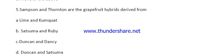Question number five: Sampson and Thornton are grapefruit hybrids derived from which cross? The options are: lime and kumquat, Satsuma and Rupee, Duncan with Daki, or Duncan with Satsuma. The right answer is option C — Duncan with Daki.